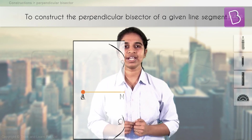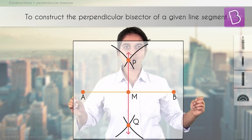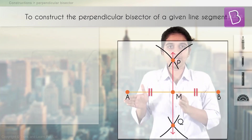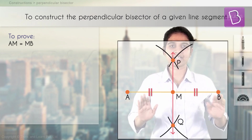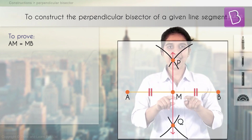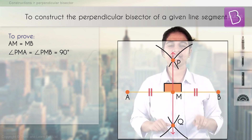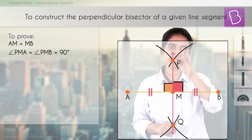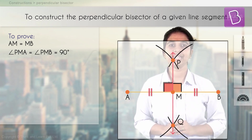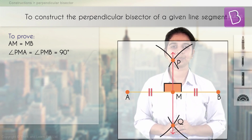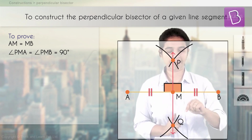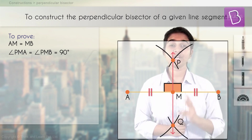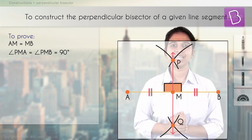What does perpendicular bisector mean? There are two things: one, that AM and MB are equal — bisector means it divides into two equal parts; and two, this angle should be 90 degrees — angle PMB as well as angle PMA should be 90 degrees. Those are the two things that perpendicular bisector means — two words, perpendicular and bisector — and we are going to prove both.